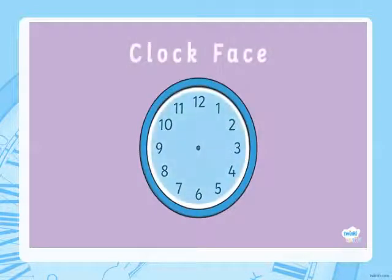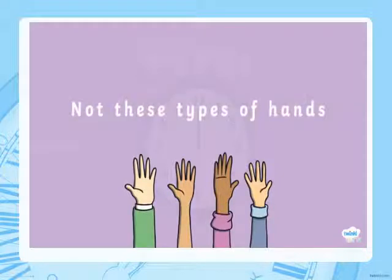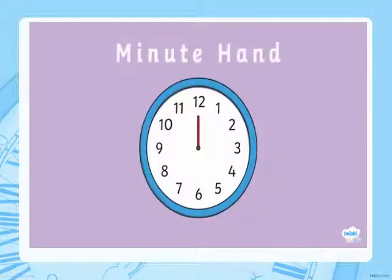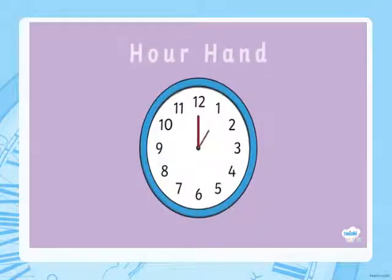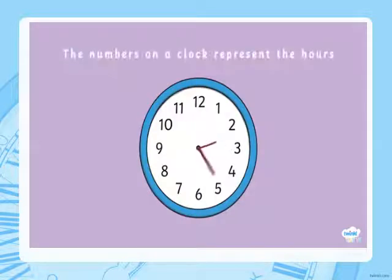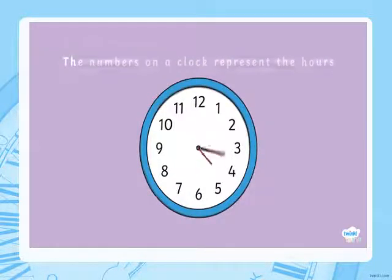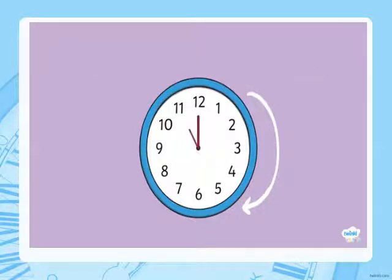This is an analogue clock. The blue highlighted area is called the clock face. The red lines are called hands — not these types of hands! We have two types of hands on the clock. The minute hand is the longer hand. The other type is called the hour hand, which lets us know what hour it is, and it is the shorter hand. The numbers on the clock face represent the hours. You will notice that both hands spin in the same direction — we call this clockwise.